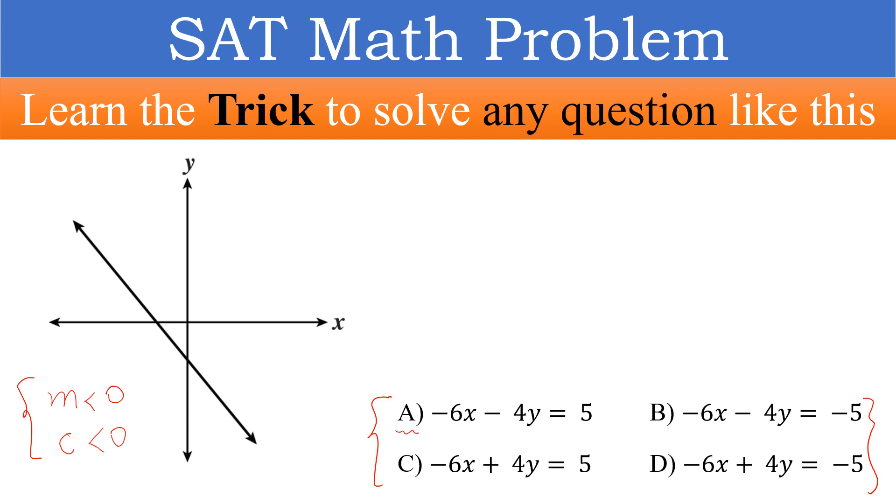First, we check option A. So, minus 6x minus 4y is equal to 5. We can write this equation as minus 4y is equal to 6x minus 5.